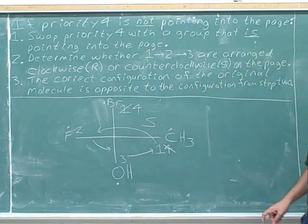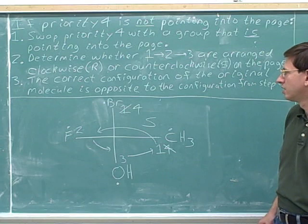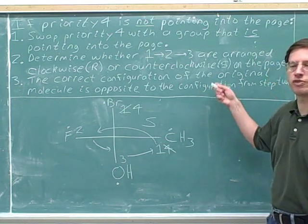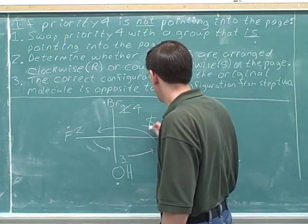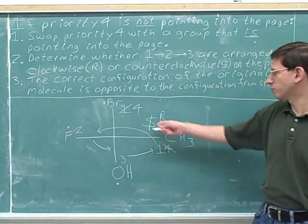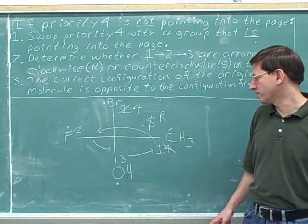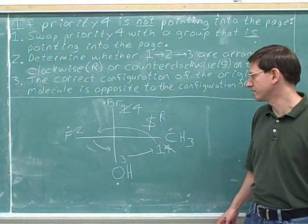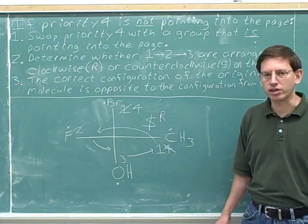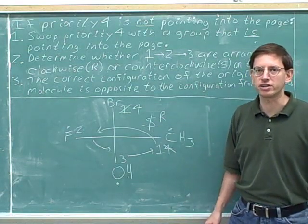After the swap, the configuration of one to two to three is counterclockwise. So what was the original configuration before the swap? Step three: before the swap, the configuration must have been opposite to what it was after the swap. That's the single swap rule — a single swap always gives you the opposite configuration. So the correct original configuration was R. This is an R stereocenter.